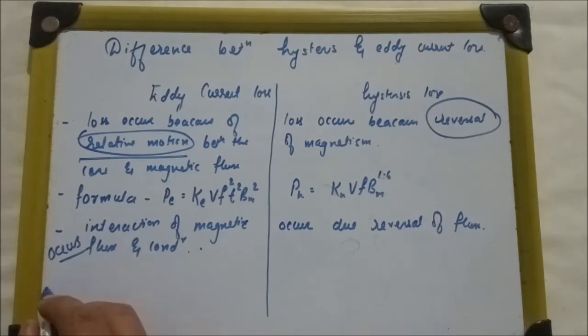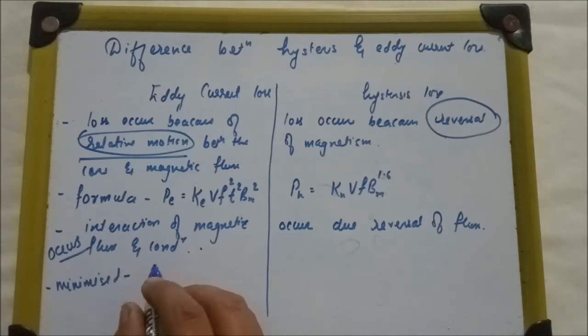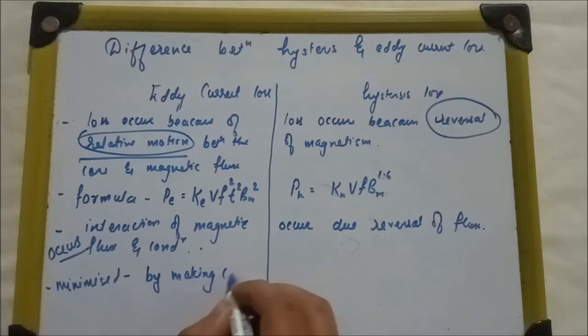And what are the major minimizing methods? How can we minimize? By making core of thin lamination.